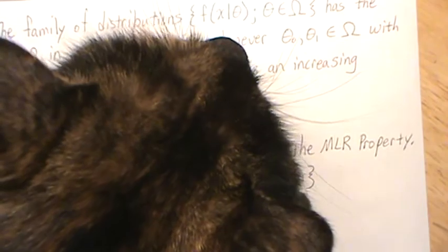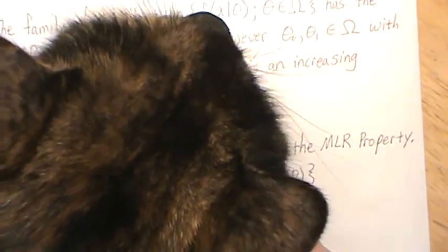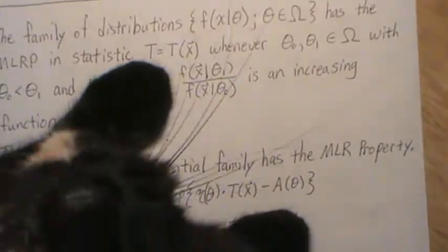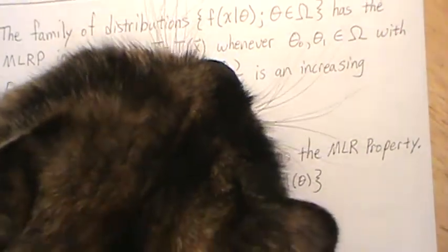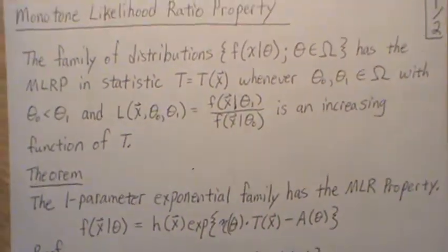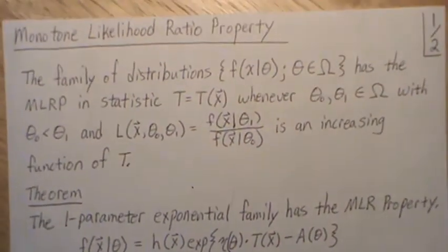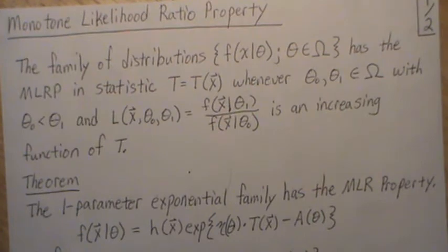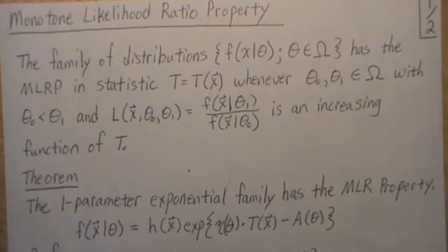Hello, this is the next video in a playlist I'm calling 'Hypothesis Testing.' My cat always loves to jump into these videos — my dad suggested I show her — so now I have to remove her. This video is on the monotone likelihood ratio property.